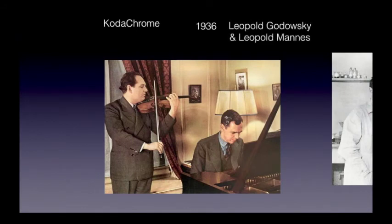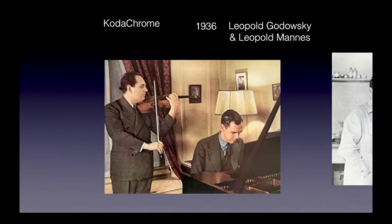Thinking in terms of a latent image that needed development changed how photographs were taken and printed. As chemical processes improved, exposure times could be shortened, which made photographs of transitory subjects a lot easier to make. Eventually, the making of the photograph in the camera became a separate operation from the processing or developing of that photograph into a visible image. After the exposure was made, development could be postponed for days, weeks, or even months.